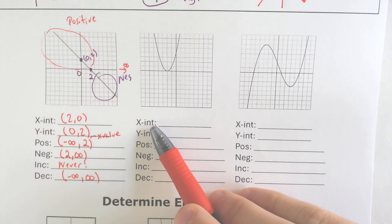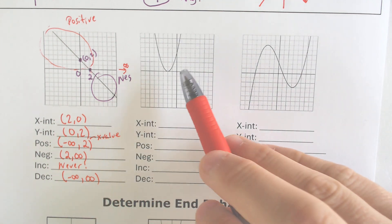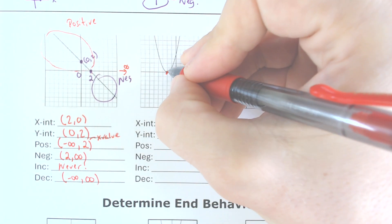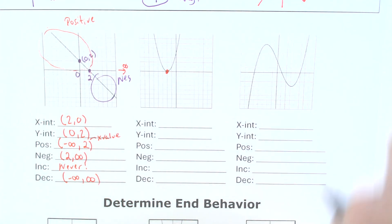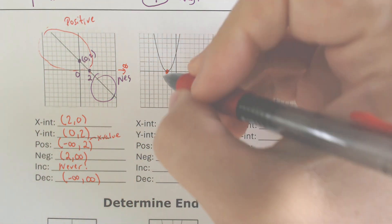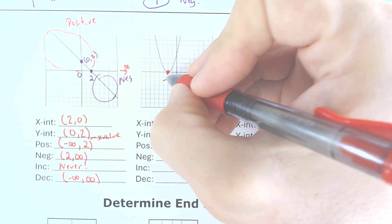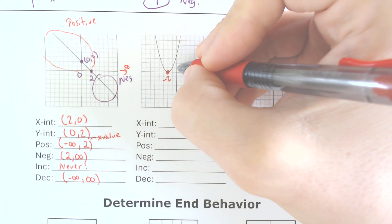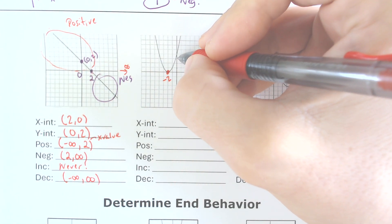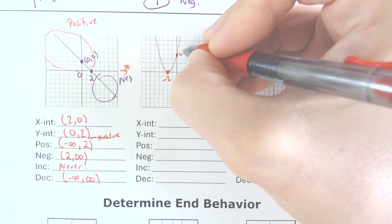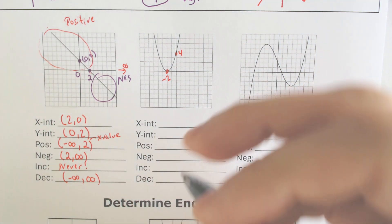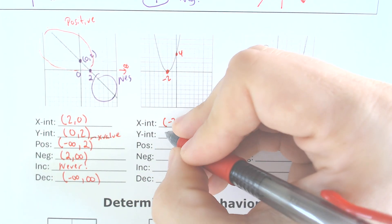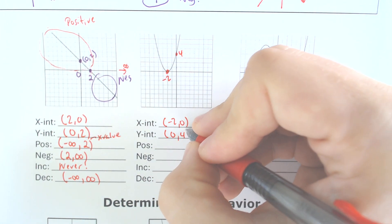Let's do the x-intercepts, y-intercepts, and all the features on this parabola. It has a single x-intercept at negative 2, and a y-intercept at 4. So the x-intercept would be at (−2, 0), and the y-intercept would be at (0, 4).